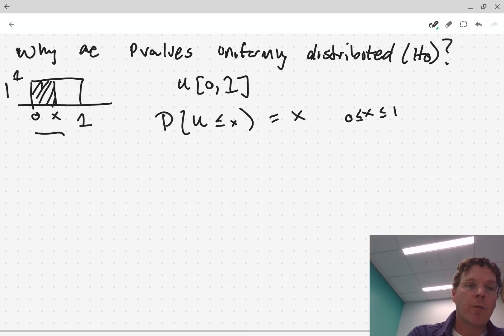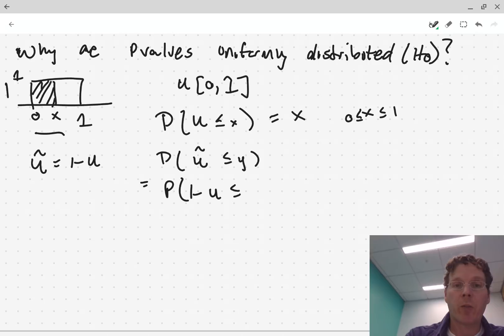Also, interestingly enough, if I want to look, if I define, let's say, U tilde as 1 minus a uniform random variable. Let's look at that. So let's look at the probability U tilde is less than or equal to Y. Well, that's equal to the probability a uniform, 1 minus a uniform, is less than or equal to Y.